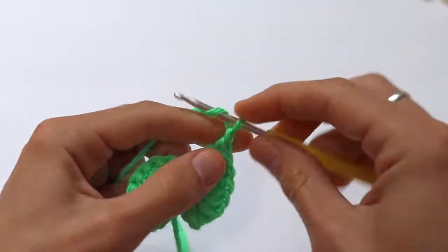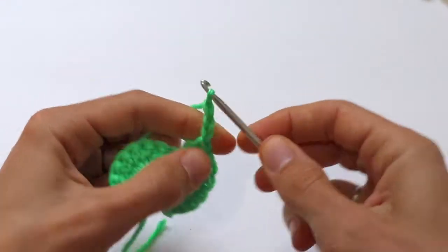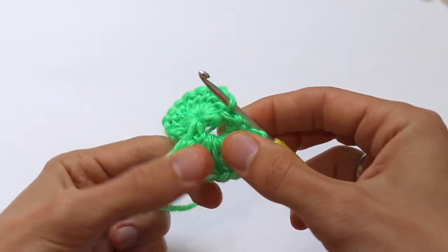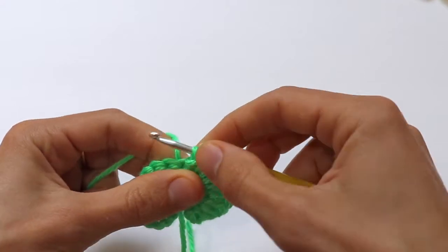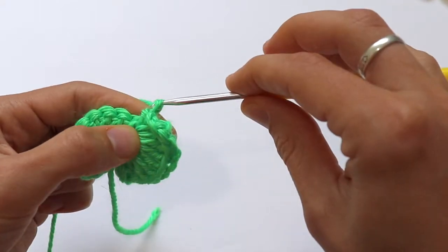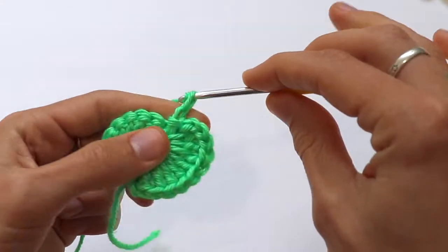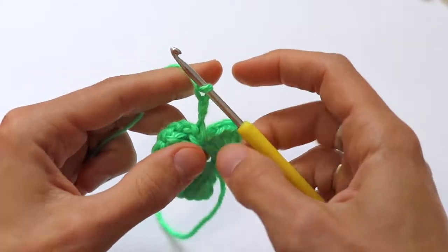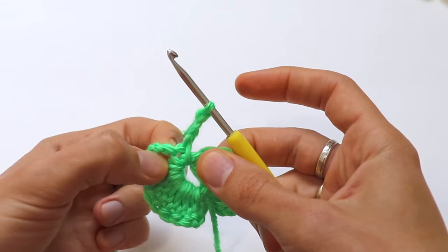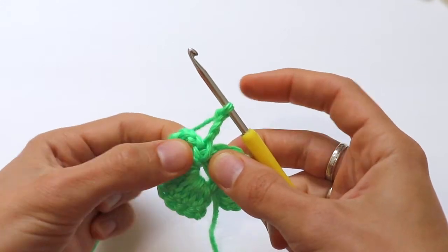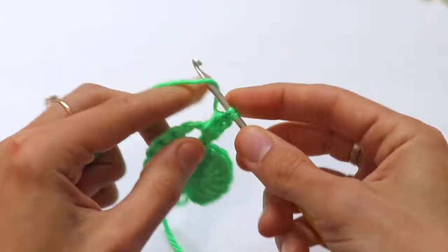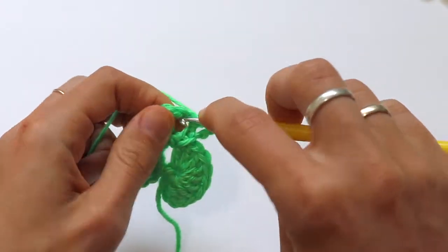And chain three and join into the ring, into the chain space of three. Turn your work and again find that chain three space and repeat the pattern. Make eight double crochet into the chain space of three.